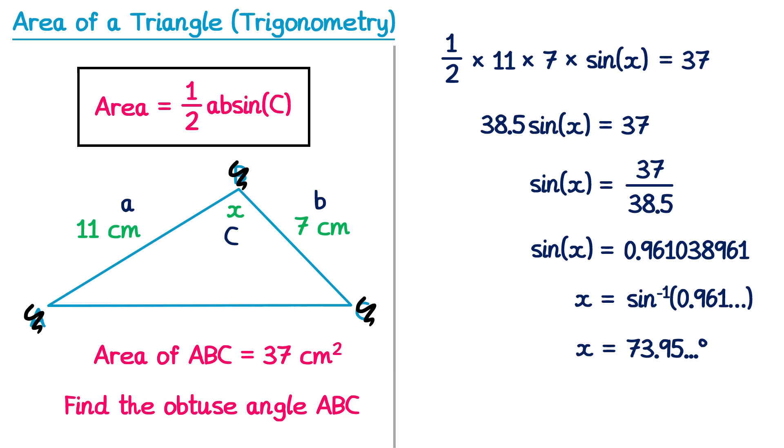However, the question asks for the obtuse angle ABC. Our answer of 73.95° is less than 90°, so it's acute — there must be another possibility. Thinking back to the ambiguous case from the sine rule video, there are two possible angles with the same sine value. To find the obtuse one, we subtract 73.95° from 180°, giving the actual answer of 106°.